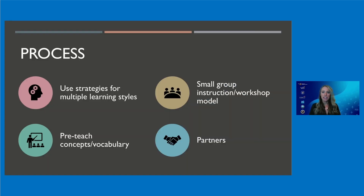Let's begin looking at ways we can differentiate the process — how students will access the information. Let's talk about strategies for different learning styles. We all have our own unique experiences and our brains learn in different ways. Students who are learning the English language will struggle with vocabulary and need lots of visuals. Students who have a significant weakness in memory will likely need information chunked and would benefit from the use of mnemonic devices. Students who struggle with executive functioning may have difficulty attending to lessons. Have you ever heard the phrase 'know your audience'? For teachers, this is paramount. We have to understand what our students know and how their brains learn in order for our teaching to have the maximum effect.